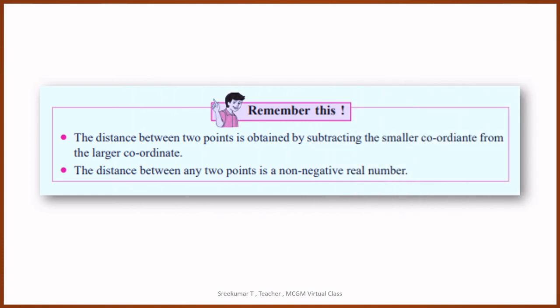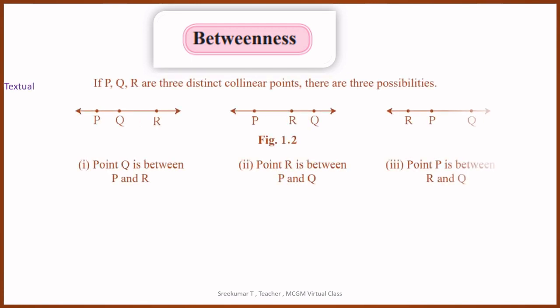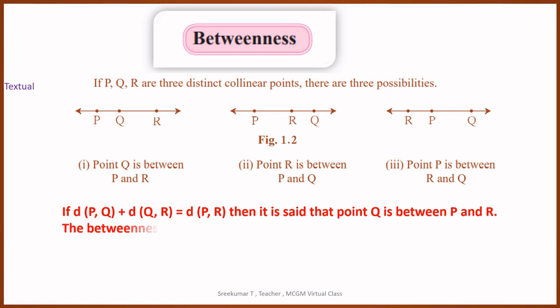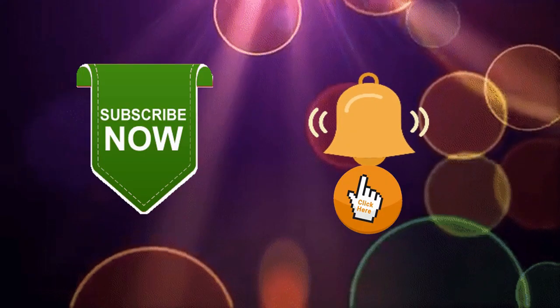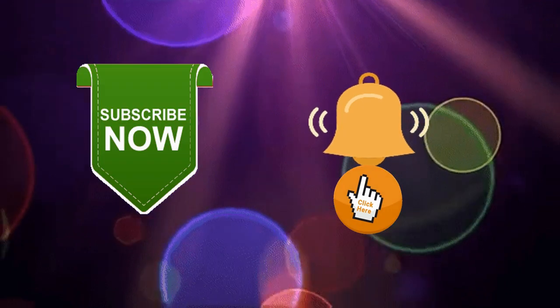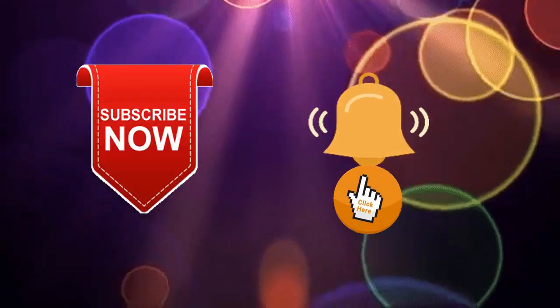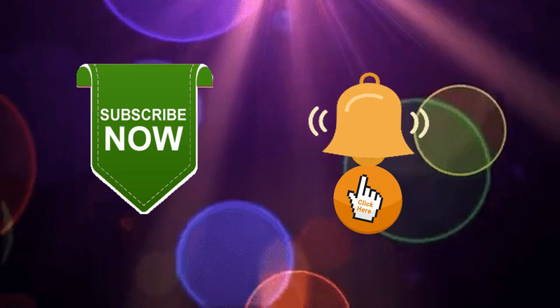Let's go ahead. And the conclusion is shown here. You are supposed to remember this. You can just note down in your book. This is the conclusion of this video. The distance between two points is obtained by subtracting the smaller coordinate from the larger coordinate. The distance between any two points is a non-negative real number. And the next topic is about betweenness, which will be discussed in the next video. That's all for me today. Thank you. Now click on the subscription button to subscribe the channel and bell button to get the notifications of new video.